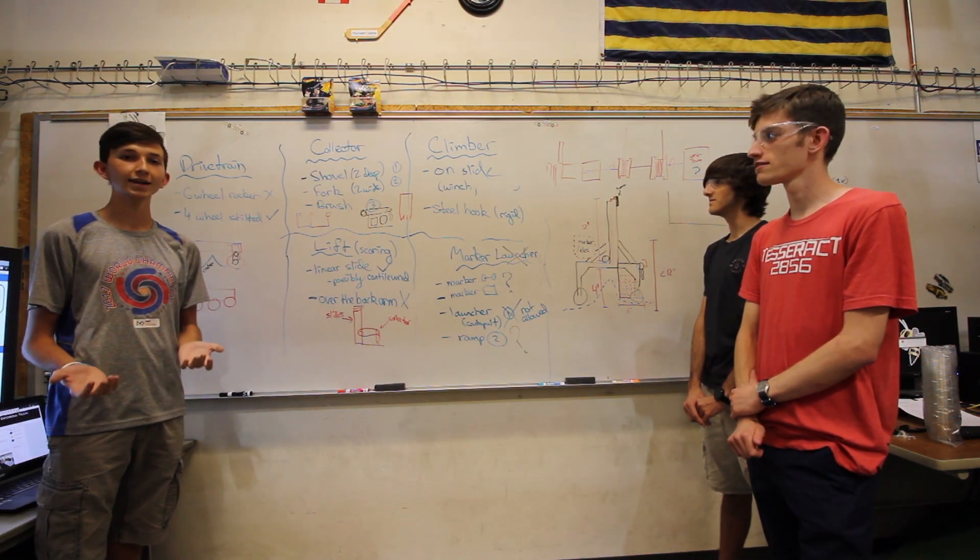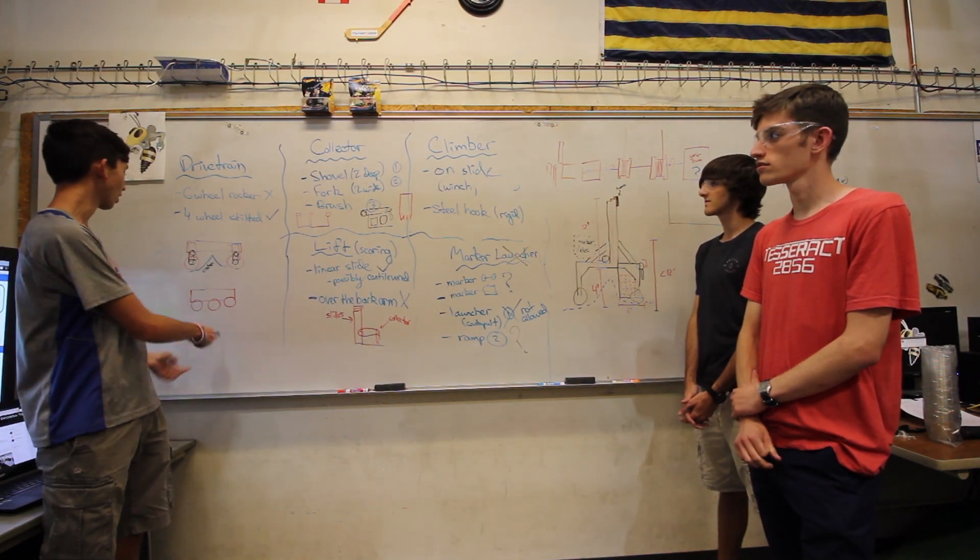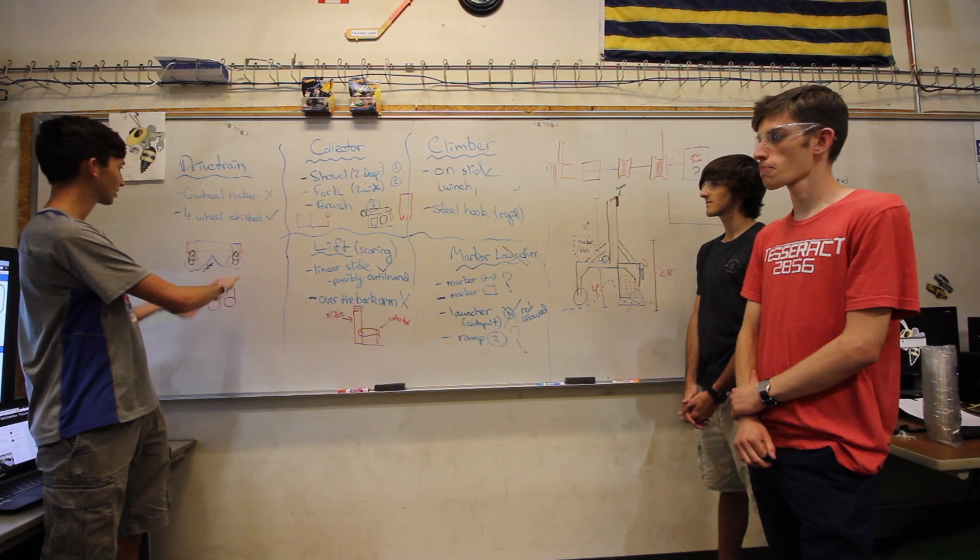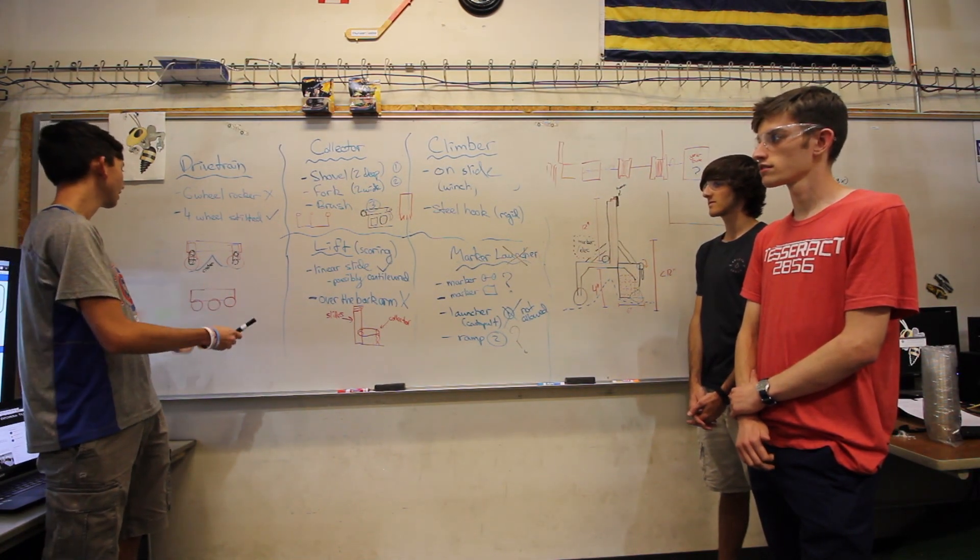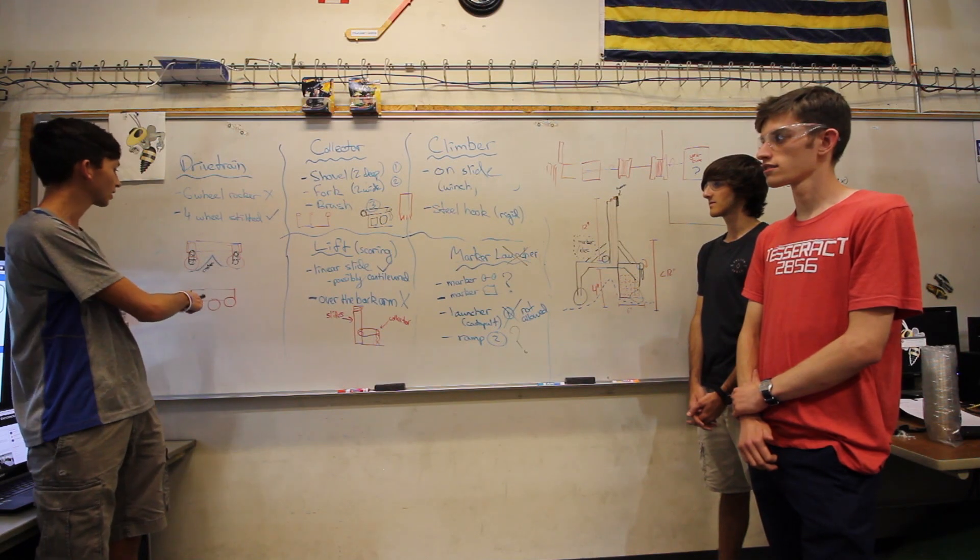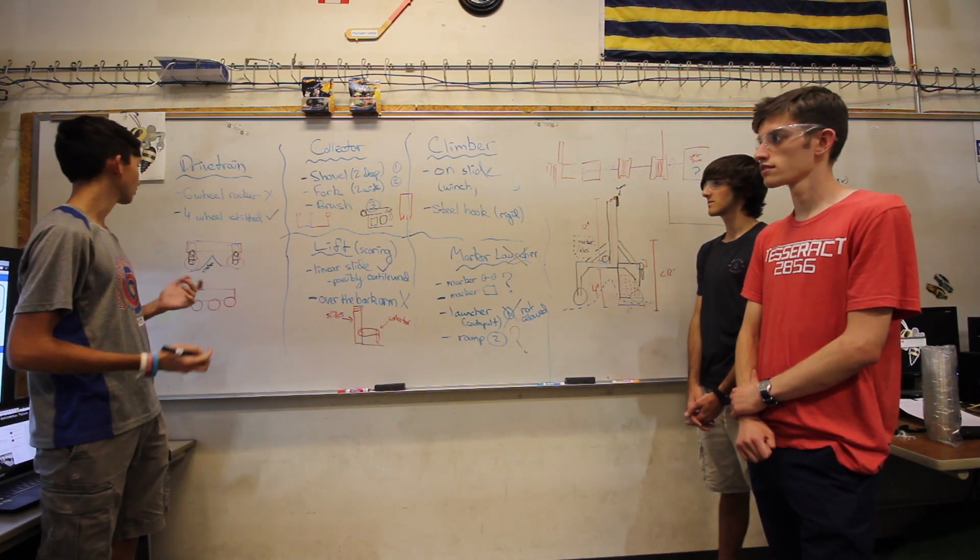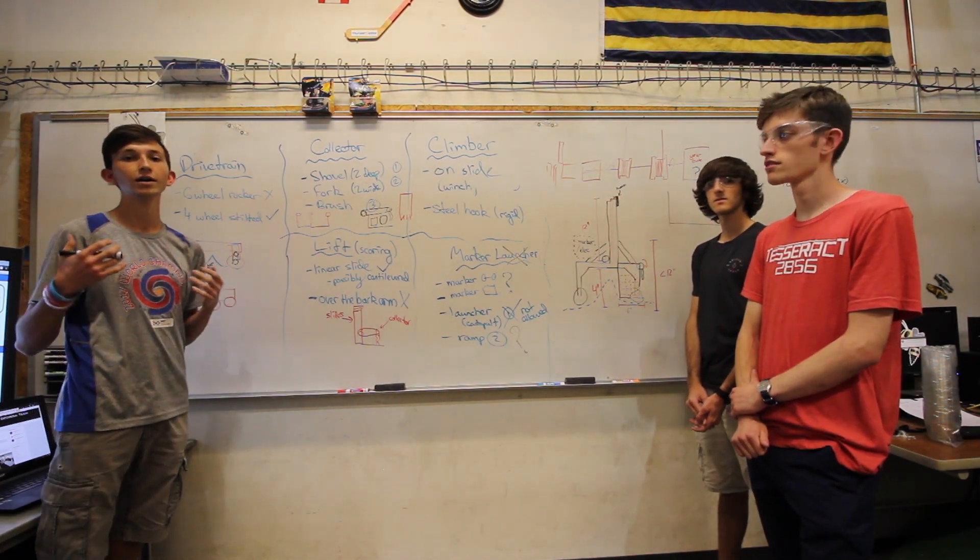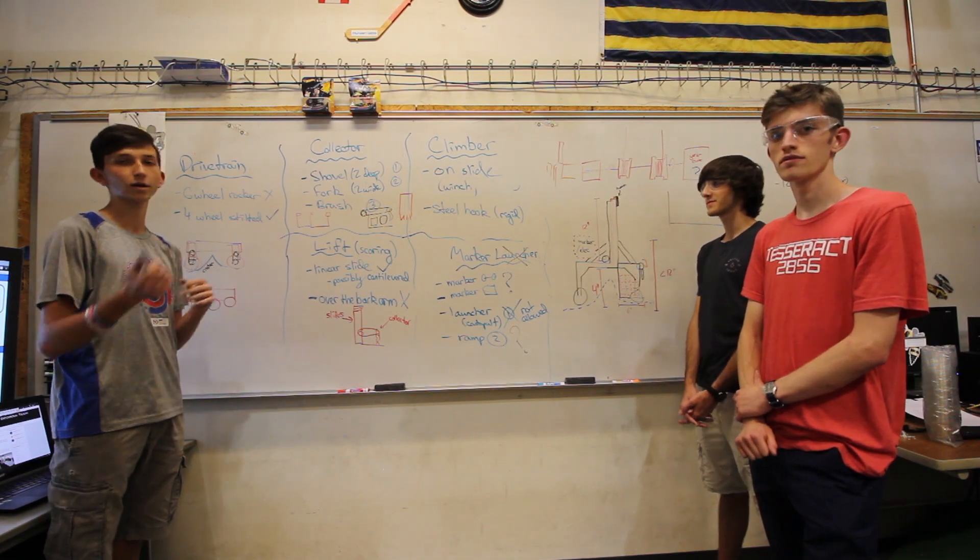The first design we discussed was the drive train. Initially we were planning on using a six-wheeled rocker design to help us get over the crater, but that was getting caught in the gaps between the wheels. So we brainstormed a four-wheel stilted drive train which can straddle the crater, allowing us to stay flat on the ground while collecting.